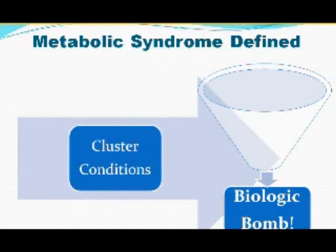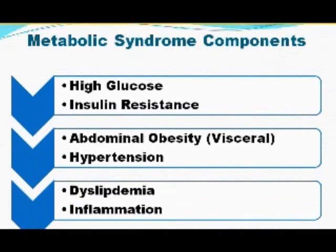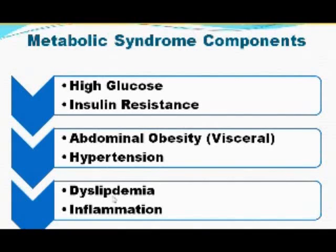So the components of metabolic syndrome. The components I will go into more detail on are high glucose, insulin resistance, metabolic or abdominal obesity or visceral obesity, hypertension or high blood pressure, dyslipidemia, and inflammation. These are the primary six components that make up metabolic syndrome and the criteria a healthcare provider would use to diagnose you.